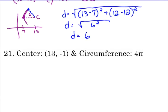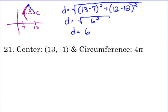Number 21. They give us the center again. That's good. That allows us to write the left side of our equation. So let's go ahead and do that. X minus 13 squared plus Y plus 1 squared because it was negative 1. We change the sign.